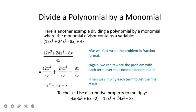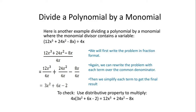To check, we use the distributive property to multiply. Our answer times the divisor should give back the dividend. So 4x times (3x squared plus 6x minus 2): 4x times 3x squared is 12x cubed, 4x times 6x is 24x squared, and 4x times negative 2 is negative 8x. Note that for multiplication we add the exponents. So we get 12x cubed plus 24x squared minus 8x, which confirms our answer is correct.